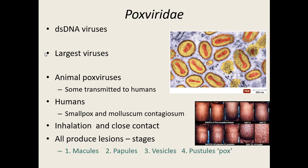Some poxviruses start off as macules, which are flat red spots almost like a rash, which can progress to papules — raised sores. Some, especially smallpox, progress to vesicles, which are sores filled with clear fluid, which can then progress to pustules where those vesicles are now filled with pus. All of these raised sores happening all over the body is when we started calling it a pox.